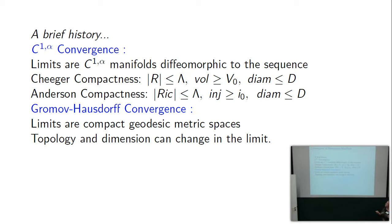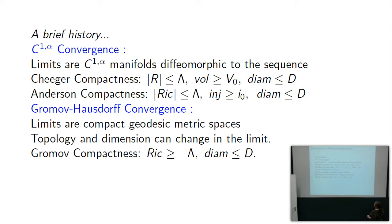The topology and dimension can change in the limit, and the limit need not be a manifold. Gromov's compactness theorem only requires Ricci bounded below by a negative constant and diameter bounded above. There is also a version for geodesic metric spaces which involves counting balls, which I will discuss later in this talk.